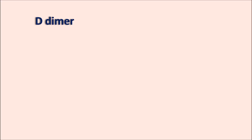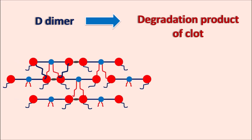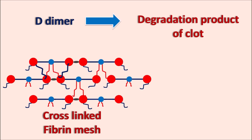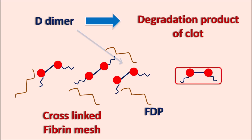What is D-dimer? D-dimer is one of the degradation products coming from the blood clot, and it is a protein obtained after dissolution of the clot. The fibrin meshwork, which is cross-linked, forms a blood clot along with platelets to stop blood flow. When this fibrin meshwork is dissolved, it produces two types of components: fibrin degradation products (FDP) and another protein fragment called D-dimer.